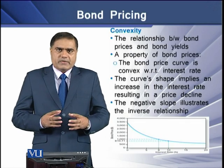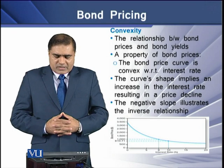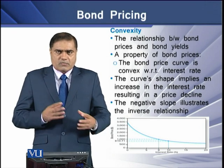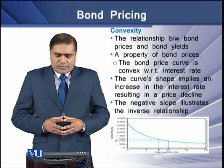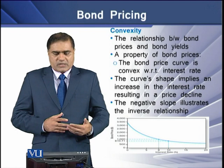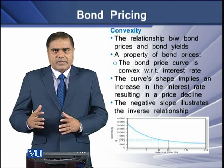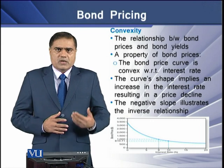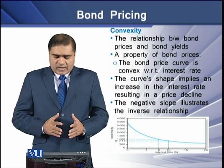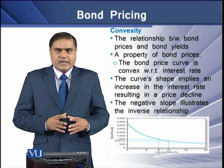Now, what is convexity with reference to the bond? Convexity is basically the relationship between the bond's prices and the bond's yield. It is a property of bond prices because the bond price curve is convex with reference to the interest rate used to discount the bond. The curve shape implies that an increase in the interest rate results in a price decline.